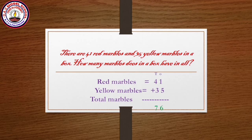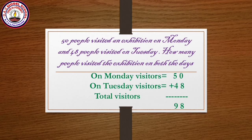First, add the ones place values: 1 plus 5 equals 6. Next, add the tens place values: 4 plus 3 equals 7. Total marbles are 76. So 41 plus 35 equals 76. Let's move on to the next example.